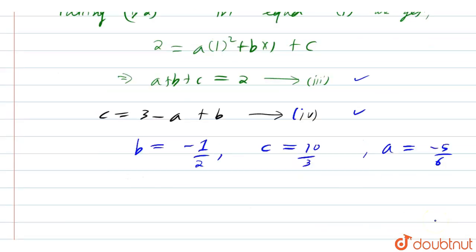Now let us put this value in equation 1, that is equation of parabola will become y equal to minus 5 by 6 x square minus 1 by 2 x plus 10 by 3. So this is our answer. Thank you.